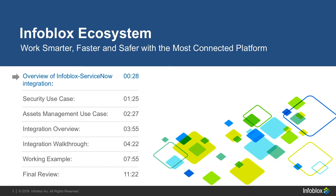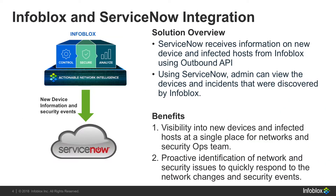Now let's start with an overview. With Outbound API, we're now able to respond faster to network changes with the help of Infoblox's ecosystem license. Using ServiceNow, admins can now view devices and incidents that are discovered by Infoblox, providing more visibility into new devices and infected hosts in a single place, and the ability to quickly respond to network events.